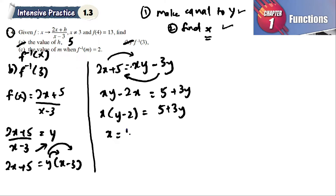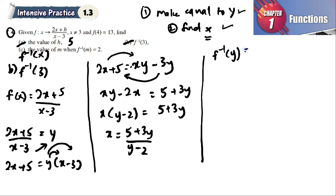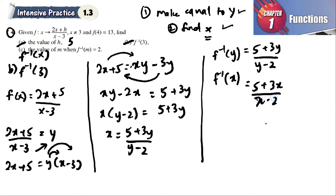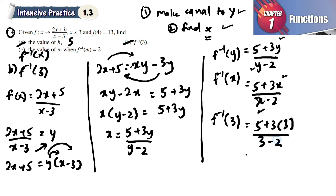Therefore x = (5 + 3y) / (y - 2), which is f inverse in terms of y. In terms of x, f⁻¹(x) = (5 + 3x) / (x - 2). Now for f⁻¹(3): substitute x = 3, giving (5 + 9) / (3 - 2) = 14 / 1 = 14.